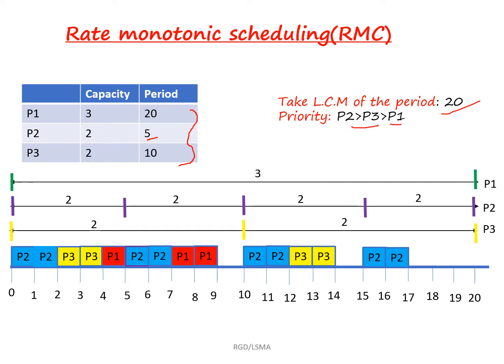Before moving on to the Gantt chart, we have to understand how to assign each and every process in this scheduling process. We take the LCM of the period because 20 is the scheduling time. We have to schedule all three processes over a period of 20, so the scheduling time is 0 to 20. Now we will see how to allocate these three processes in the scheduling process for a period of 0 to 20.